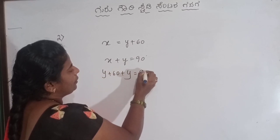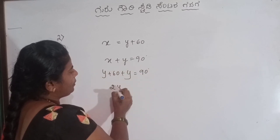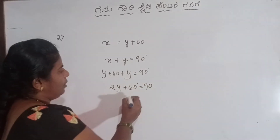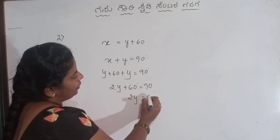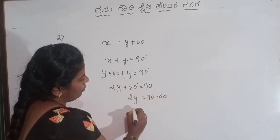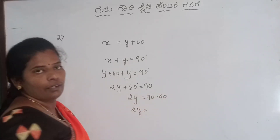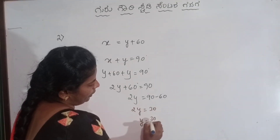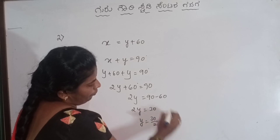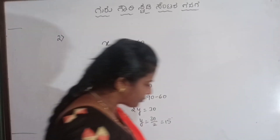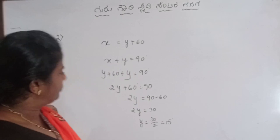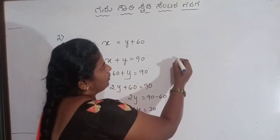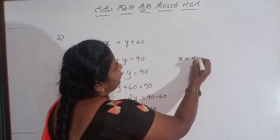So y is 90 degree. 2y plus 60 degree is equal to 90 degree — how is that? y is equal to 90 minus 60. So 2y is equal to 30 degree. It means y is equal to 30 divided by 2, which is 15 degree. Isn't it? How is it? 1 math: x is equal to y plus 60.